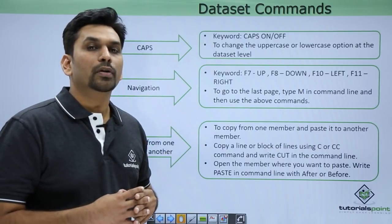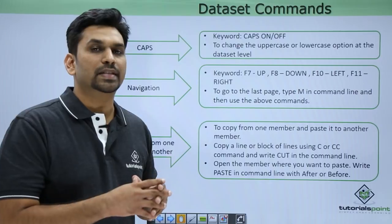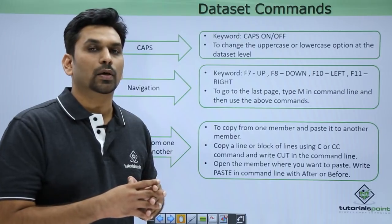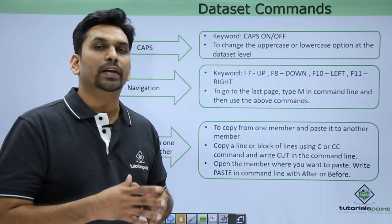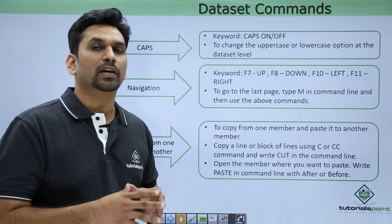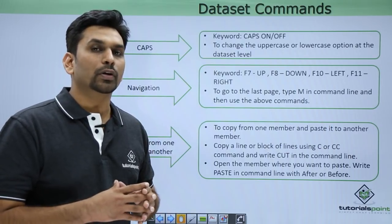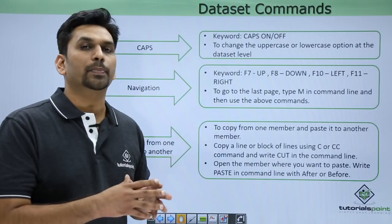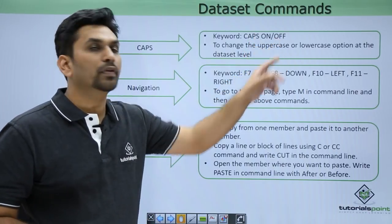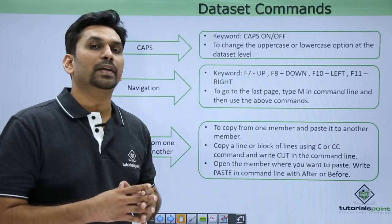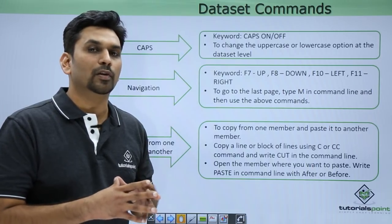First is CAPS. If you want all text in uppercase, you need to type 'caps on' and hit enter — whatever you write in the file will be automatically converted to uppercase. If you want the actual format, type 'caps off' and hit enter.